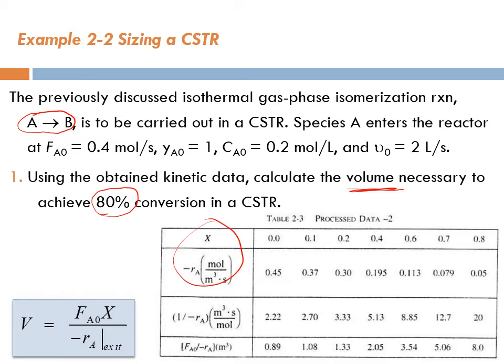The design equation says V equals FA0 times X divided by minus RA, which is evaluated at the exit. So for a conversion of 0.8, the value of FA0 over minus RA equals 8, which has the units of cubic meter.